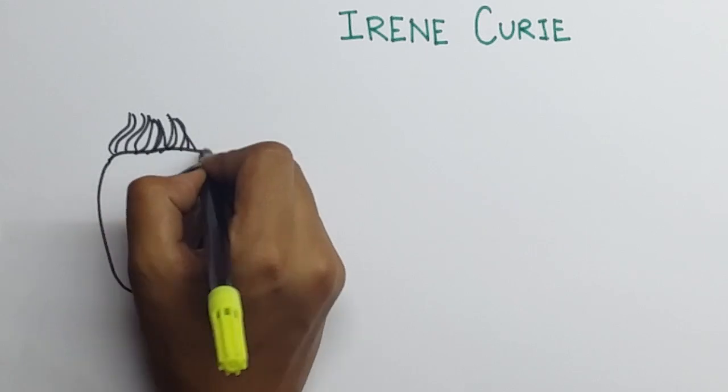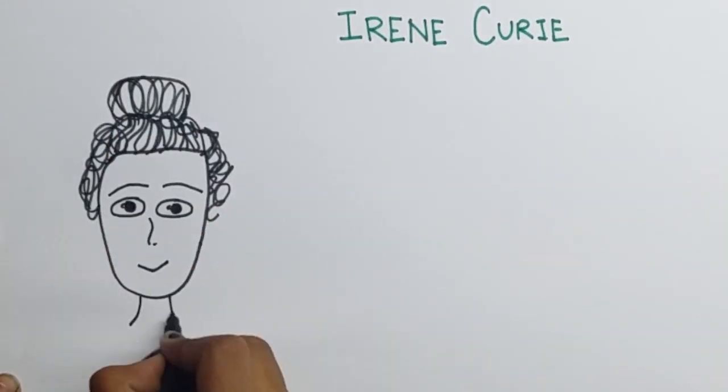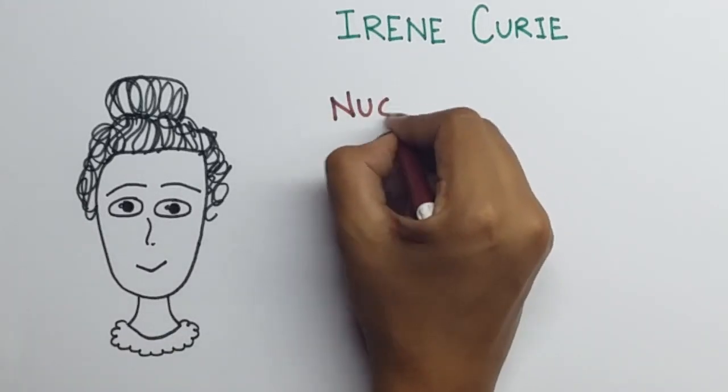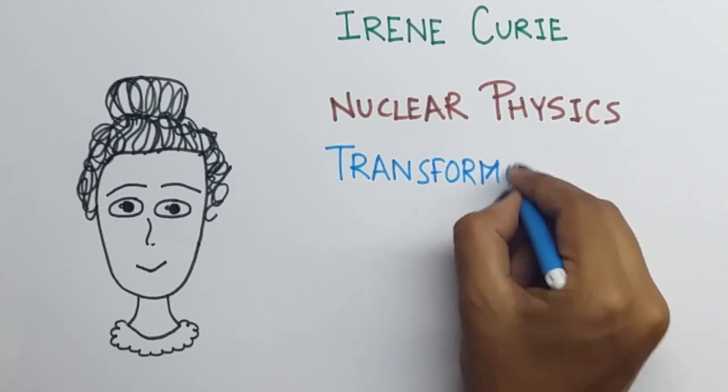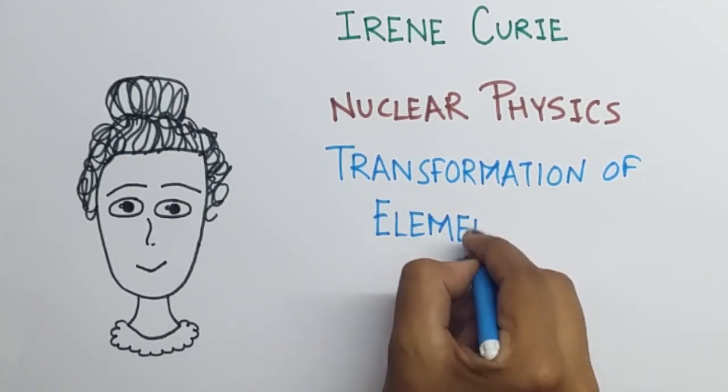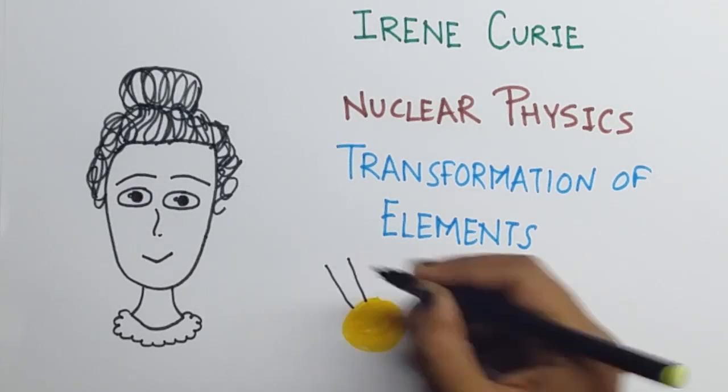Irene Curie began her scientific career as a lab assistant at the Radium Institute of Paris. She continued research in nuclear physics as well as transformation of elements and finally for the discovery of artificial radiation was given the Nobel Prize for Chemistry in the year 1935.